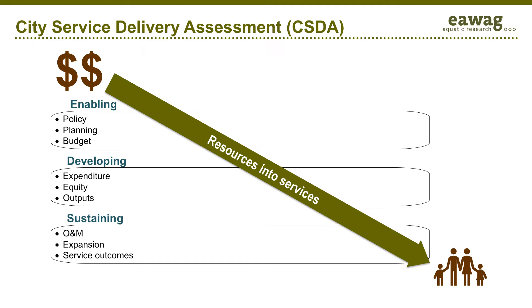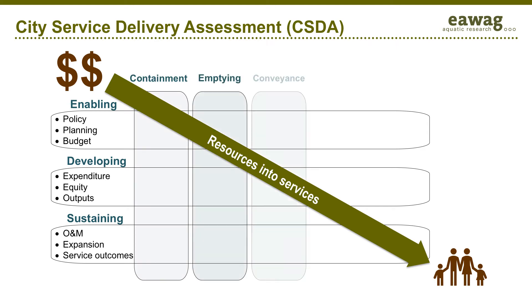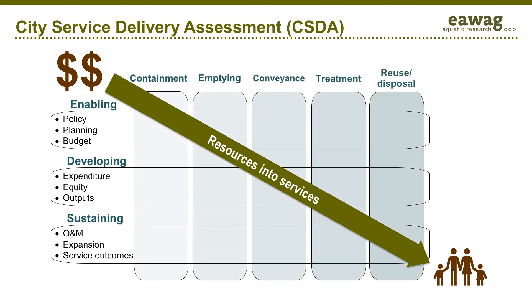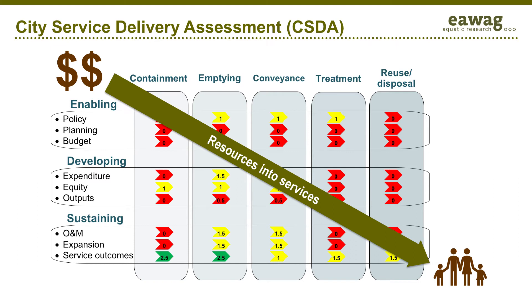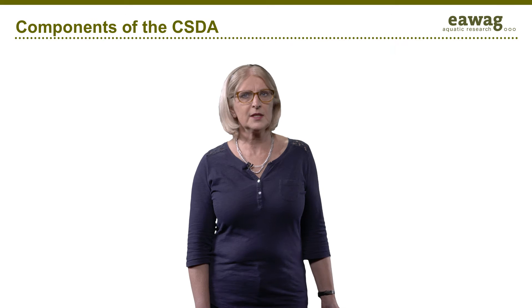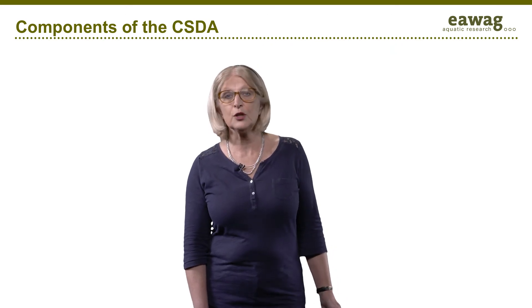Each pillar is made up of three indicators. Each indicator is examined for every step of the service chain, from containment to treatment and reuse or disposal. Each indicator is scored and assigned a color based on that score. The CSDA focuses on the city, but considers national and state or regional institutions and regulations whenever they are relevant.